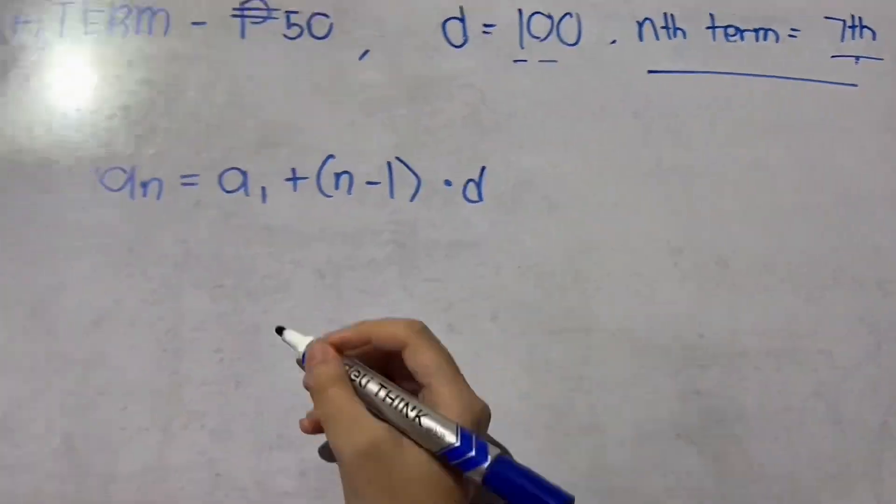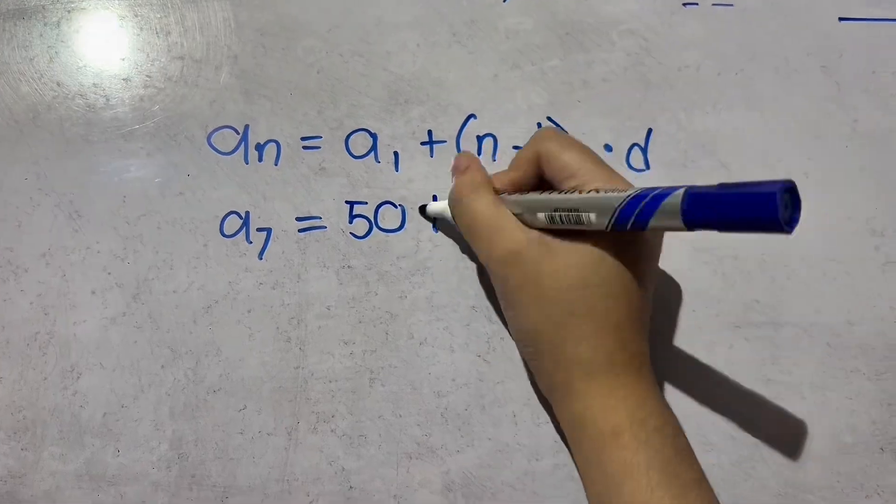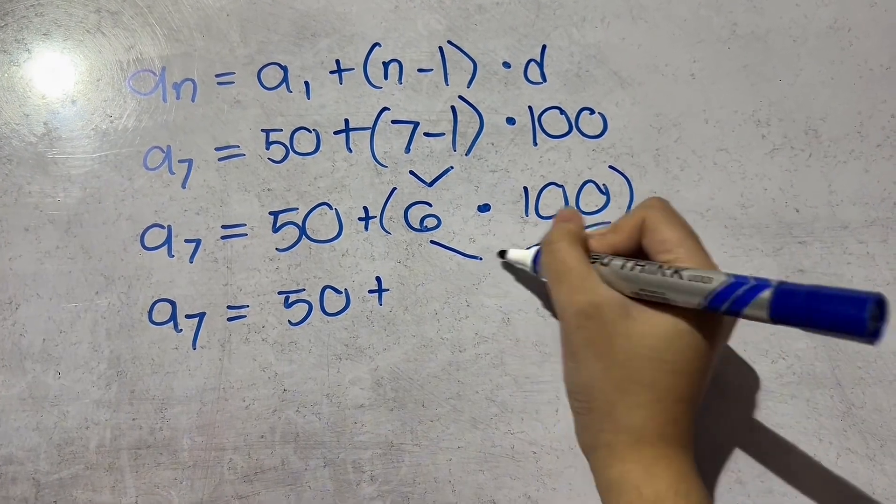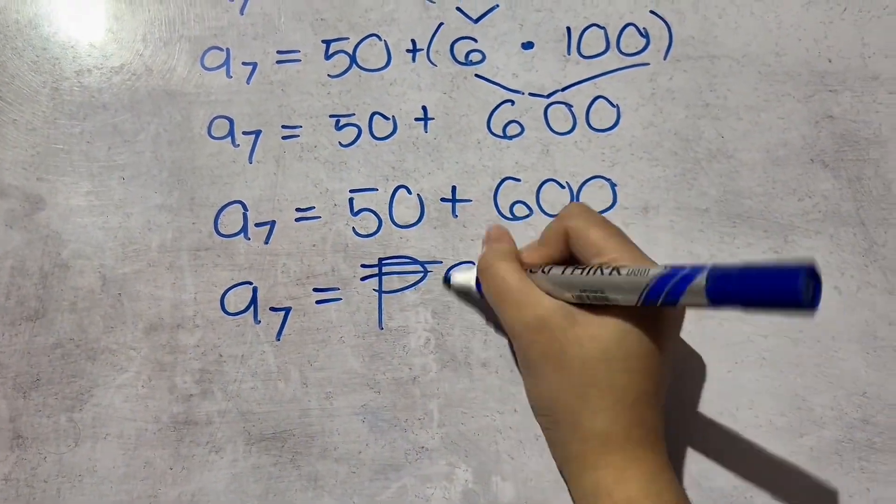Substituting these values into the formula: A sub 7 is equal to 50 plus the quantity of 7 minus 1 times 100. We must never forget the formula. Applying the order of operations or PEMDAS, we must first solve the number inside the parenthesis. Next, we solve 6 times 100 — we must now multiply. And lastly, we add 50, which is the value for the first term, and 600. Therefore, the value for the seventh term, or A sub 7, is 650. This means that by the seventh week, Matthew's total savings amount to 650 pesos.